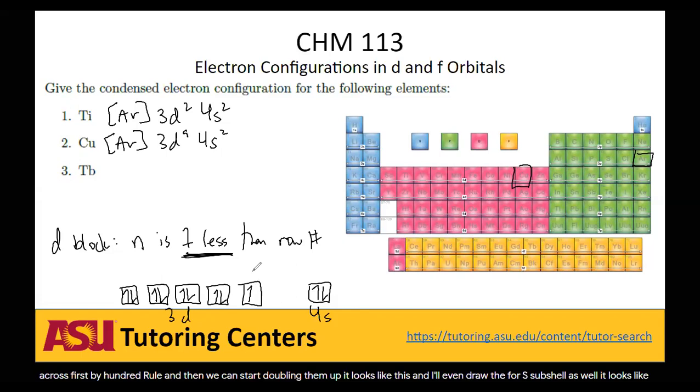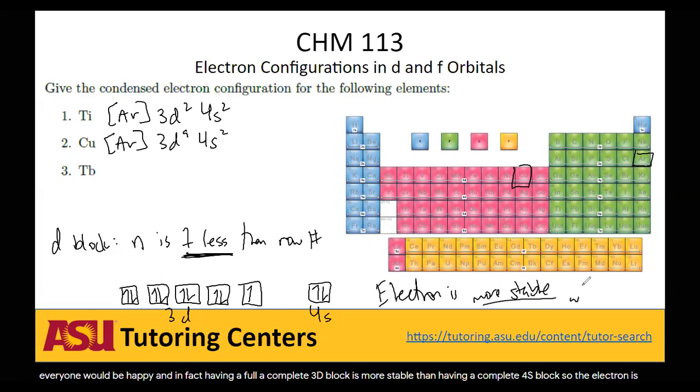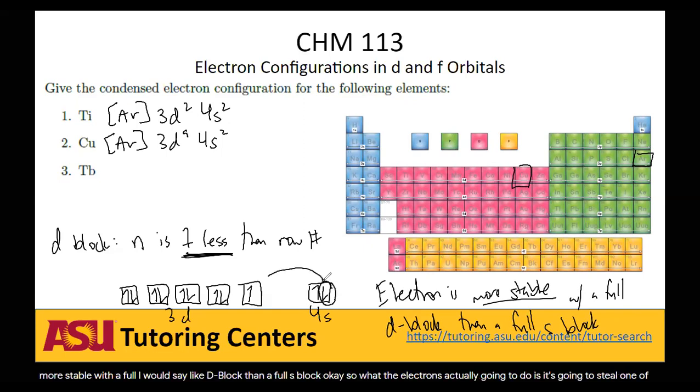It's so close to being full, but it's not quite there, right? If we had one more electron, the 3d block would be full, it would be complete, everyone would be happy. And in fact, having a complete 3d block is more stable than having a complete 4s block. So the electron is more stable with a full d block than a full s block. So what the electron is actually going to do is it's going to steal one of these electrons and bring it over there.